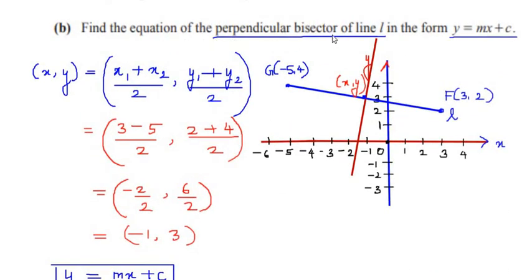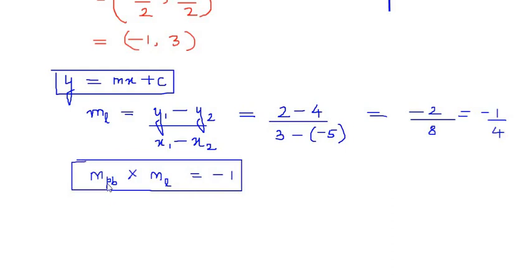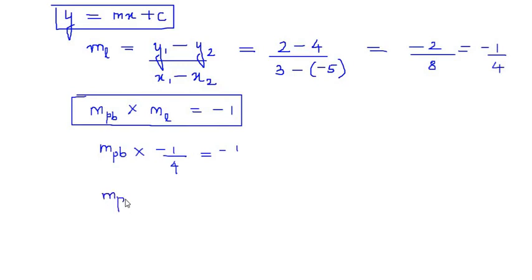Since we need the gradient of the perpendicular bisector, we use the condition: gradient of perpendicular bisector × gradient of line L = -1. So gradient of perpendicular bisector × (-1/4) = -1, giving gradient of perpendicular bisector = -1 ÷ (-1/4) = 4.